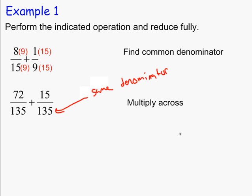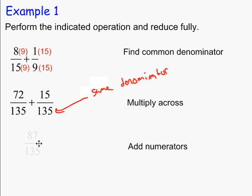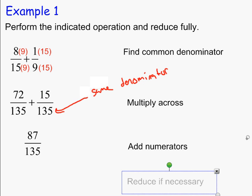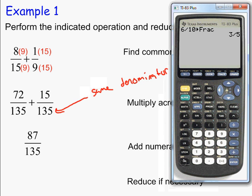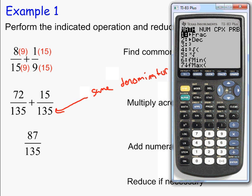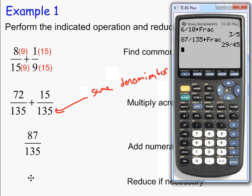Now you just add the numerators. It is going to be 72 plus 15, which gives you 87 over 135. You are not going to add the denominators — the denominators just stay. Finally, you reduce if necessary. Using the calculator: 87 divided by 135, click math, hit enter on fraction, hit enter again — it reduces to 29 over 45.